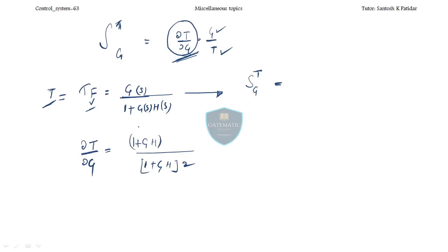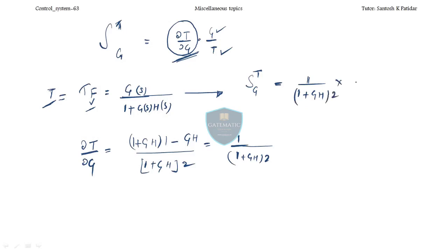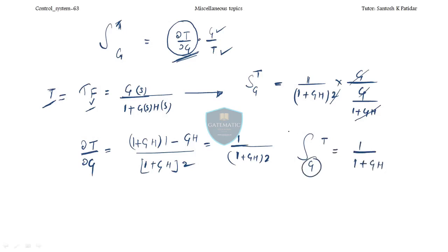Differentiating T = G/(1+GH) with respect to G gives 1/(1+GH)². Putting everything into the sensitivity formula — multiplying by G/T — the G cancels, and one factor of (1+GH) cancels. Finally, the sensitivity of the transfer function due to open-loop parameter G is 1/(1+GH).